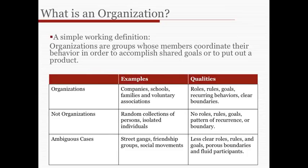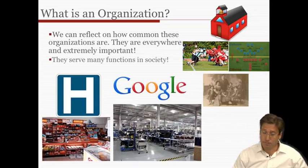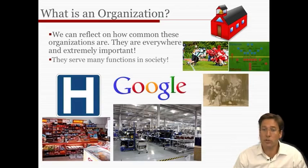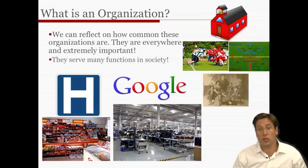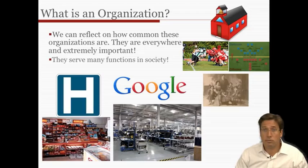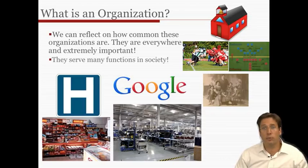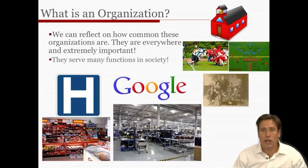Now that we have some idea of what is and is not an organization, we can start reflecting on how common and important organizations are. Looking at this image, we see a variety of organizations. Organizations accomplish most of what society wants and needs — from socialization in schools to re-socialization through prisons or mental health care facilities, from tax collecting, public administration, protection and soldiering, to production and distribution of goods, service provision like grocery stores, preservation of culture like museums, communication like Google or Microsoft, and even recreation.